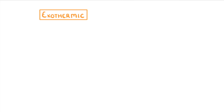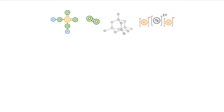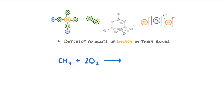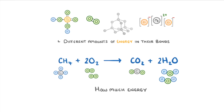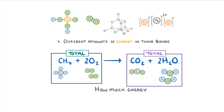The important concept to understand in this topic is that different chemicals store different amounts of energy in their bonds. For example, if we took the reaction methane plus oxygen goes to form carbon dioxide and water, then each of these different molecules would hold a different amount of energy — they'd each have different amounts of energy in their chemical energy stores. What's important to us though is how much energy all of the reactants have in total, compared to how much energy all the products have in total.